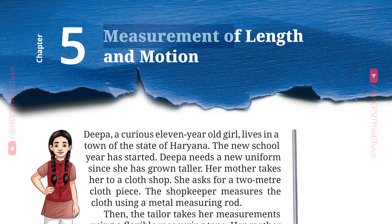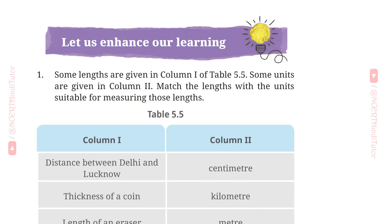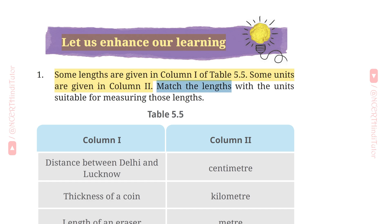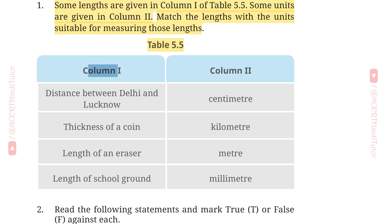Chapter 5 Measurement of Length and Motion — Question Answers from Class 6 Subject Science Book Curiosity. Let us enhance our learning. Question 1: Some lengths are given in Column 1 of Table 5.5 and some units are given in Column 2. Match the lengths with the units suitable for measuring those lengths.